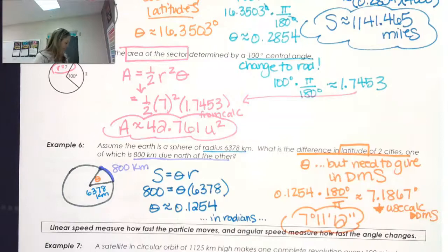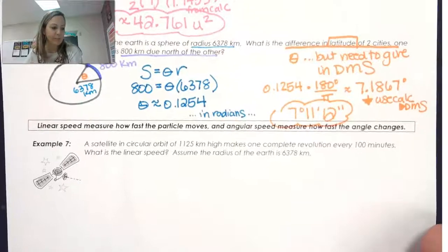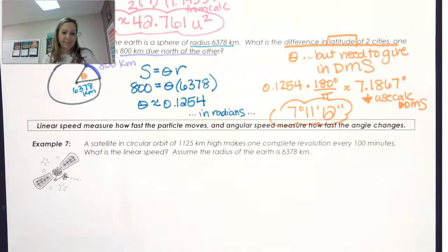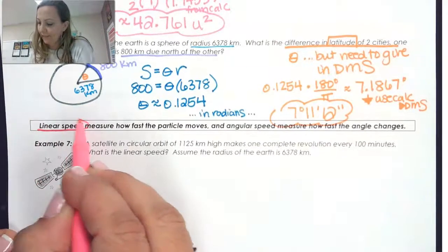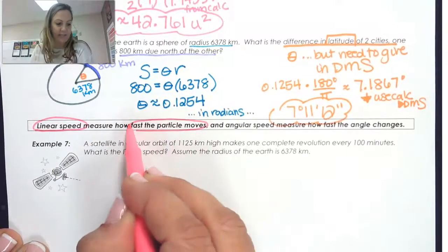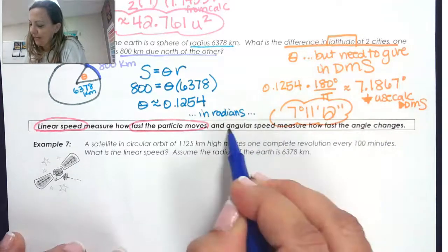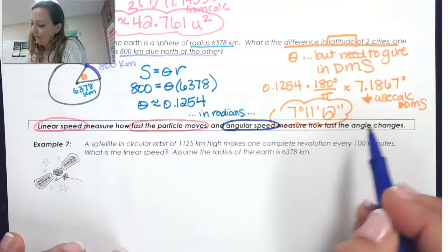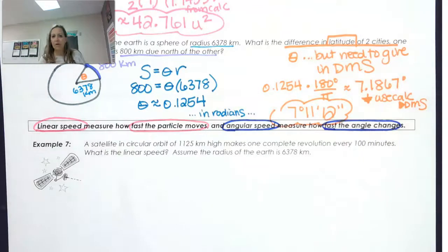The next topic is linear speed and angular speed. Linear speed measures how fast something moves, while angular speed measures how fast the angle changes.